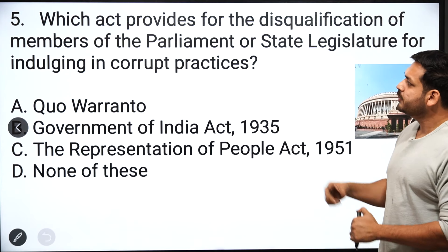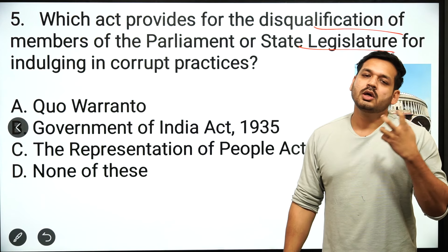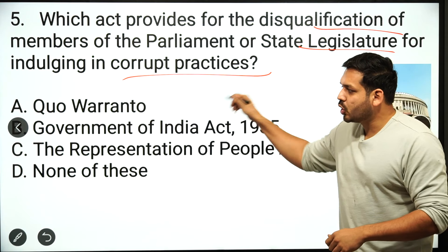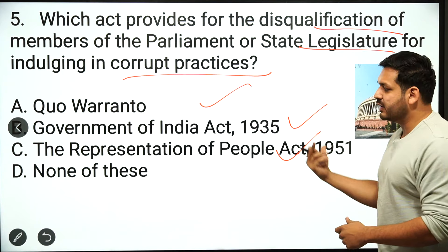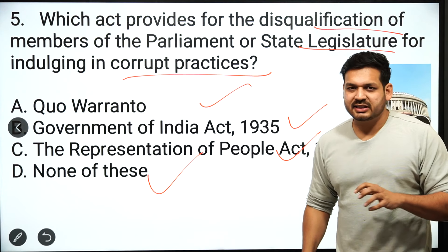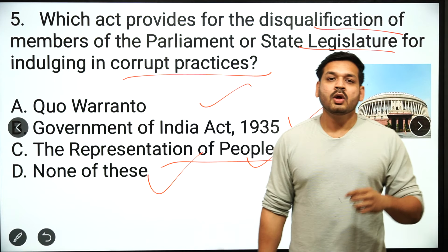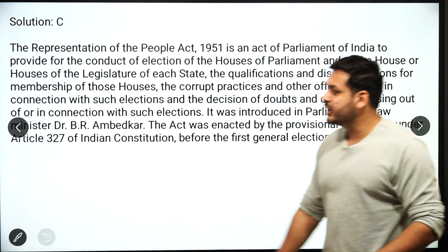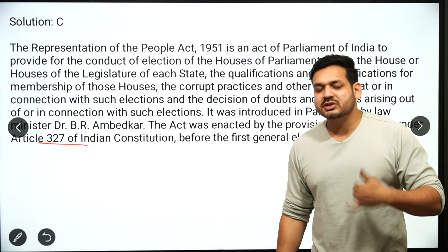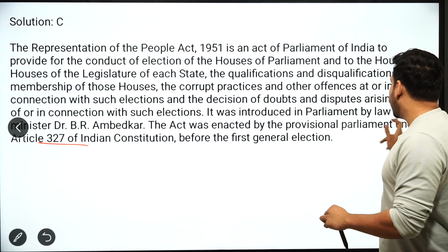The fifth question: which act provides for the disqualification of a member of Parliament or state legislature in the case of corrupt practices? Options are: Government of India Act 1935, Representation of People Act 1951, or none of these. The correct answer is Representation of People Act 1951. This act was passed under Constitution Article number 327. Remember, this was passed when the first election was held in the country. RPA is also a very important act.